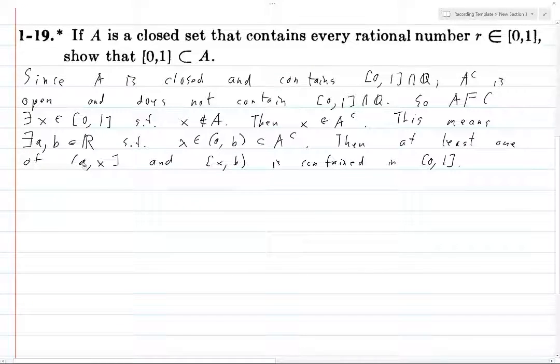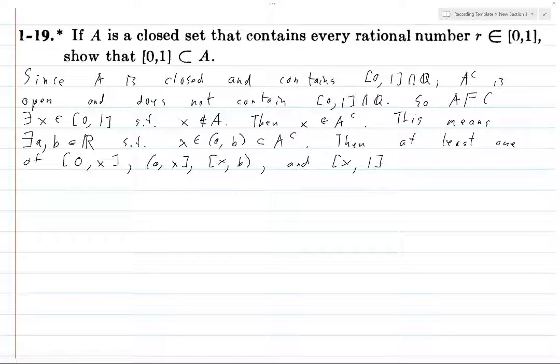It's at least one of closed interval from 0 to X and closed interval from X to 1. I guess we have to include all of those cases: either [0,X], [A,X], [X,B], and [X,1].